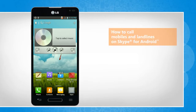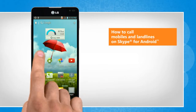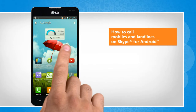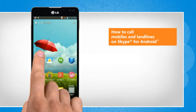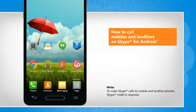Hi friends. Do you want to use the Skype app on your Android phone to call your friends on their mobile or landline phone numbers? Here are the steps to do so on your Android phone. For demo purpose, we are showing the steps on LG Optimus L9 phone that is powered by Android.